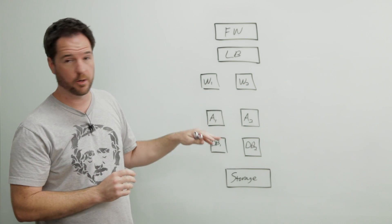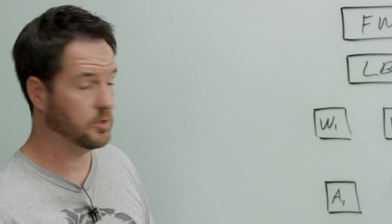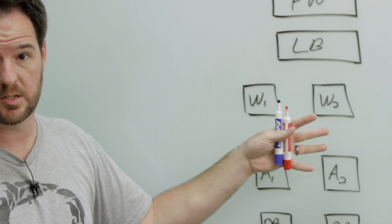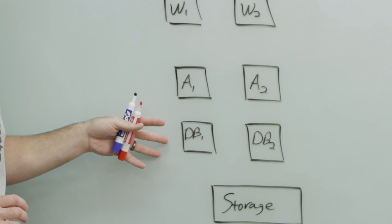So what we have here in front of you is a typical configuration that our SaaS customers might deploy. We've got our firewall, load balancer, and storage layers. These are shared across the entire environment. We also have our web layers, app layers, and database layers.